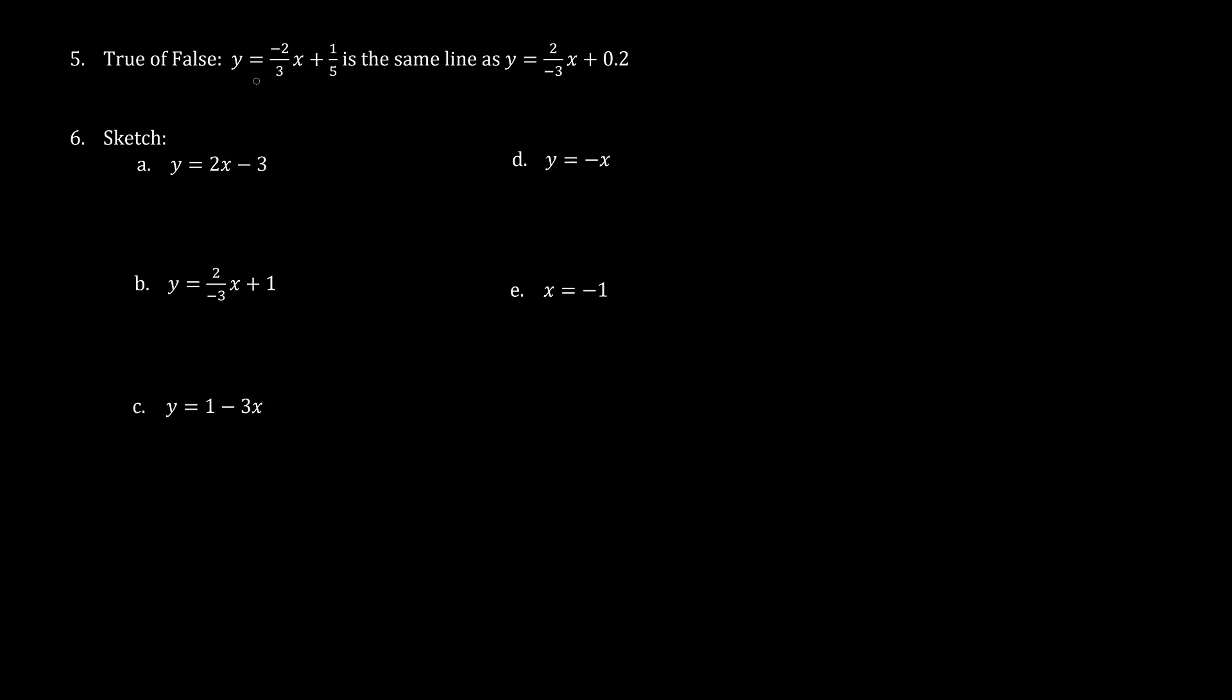True or false: y equals negative two-thirds x plus one-fifth is the same line as y equals two over negative three x plus zero point two. This negative sign moves from the numerator to the denominator, there's no difference. And one-fifth, the fraction, is the same as the decimal number zero point two, so it is true.